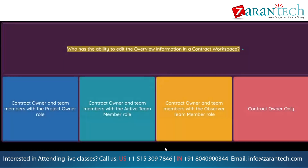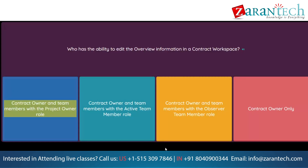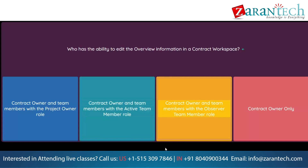Question: Who has the ability to edit the overview information in a contract workspace? Option 1: Contract owner and team members with the project owner role. Option 2: Contract owner and team members with the active team member role. Option 3: Contract owner and team members with the observer team member role. Option 4: Contract owner only.